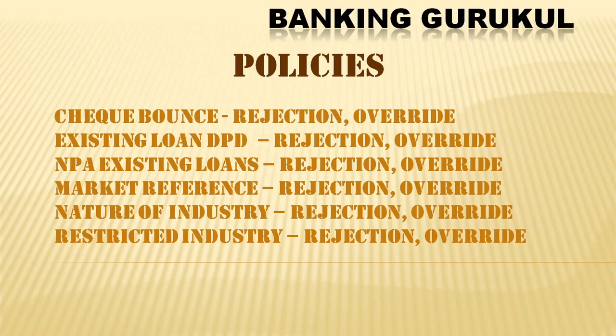If a customer has check bounces, you decide whether to reject or allow up to three bounces with override. Other policies include existing loan DPD — if 30 DPD or 60+ DPD, specify where to override, approve, or reject. If the customer has an existing NPA account, you decide whether to override or reject.